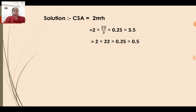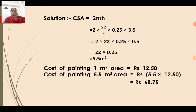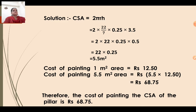7 ones and 7 fives cancel to give 0.1, then 2 into 0.5 becomes 1. Therefore 22 into 0.25 equals 5.5 meter square. So the curved surface area is 5.5 meter square. Now find the cost: the cost of painting 1 meter square is Rs. 12.50. Therefore the cost of painting 5.5 meter square equals 5.5 into 12.50, which gives Rs. 68.75. Therefore the cost of painting the curved surface area of the pillar is Rs. 68.75.